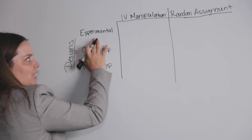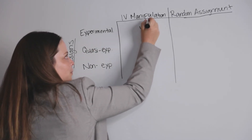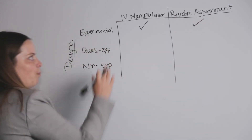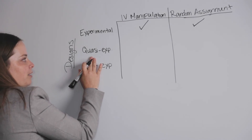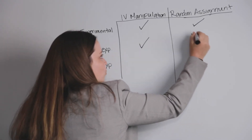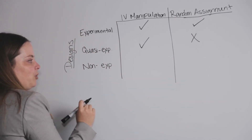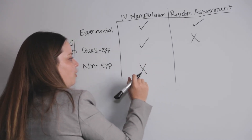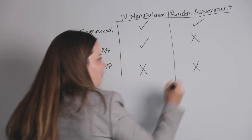In an experimental design, we have an independent variable manipulation and random assignment, so both of those boxes are checked. In a quasi-experiment, we have an independent variable manipulation but no random assignment. Then lastly, in non-experimental designs, we have neither — no independent variable manipulation nor random assignment.